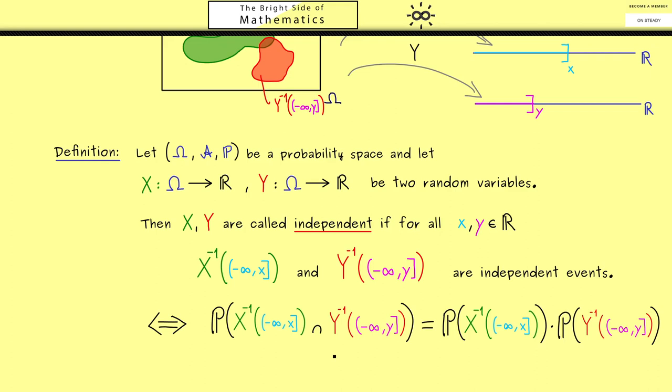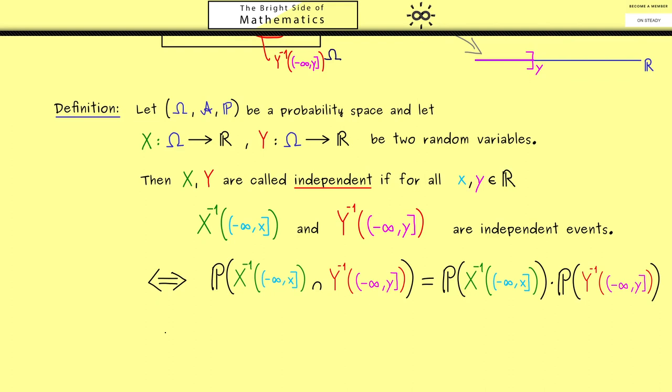Hence P of the one set intersect with the other set is given as P of the one set times P of the other set. And now since we have pre-images here, we can simplify this notation even more. On the left-hand side, we can write this is X is less or equal than lowercase x and Y is less or equal than lowercase y. Then of course we could do the same thing on the right-hand side.